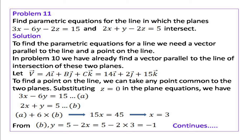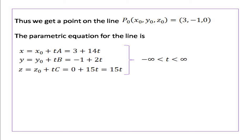To find the point on the line of intersection, we have to solve the two equations. Putting z equal to 0 in the equations of the two planes, we have 3x minus 6y equal to 15 and 2x plus y equal to 5. Now we have two equations in two unknowns. Solving these two equations, we get x equal to 3 and y equal to minus 1. Together with z equal to 0, we get a point on the line p0: (3, minus 1, 0).